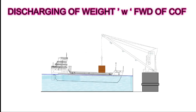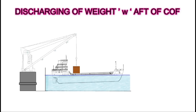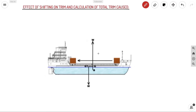Here we have a ship trimmed by head and we are discharging a weight forward using a shore crane — the vessel goes to even keel. In another scenario, a ship trimmed by aft has a weight discharged from aft using a derrick, and the ship goes to even keel.